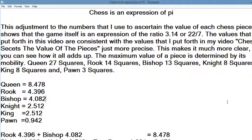This adjustment to the numbers that I use to ascertain the value of each chess piece shows that the game itself is an expression of the ratio 3.14 or 22 over 7. The values that I put forth in this video are consistent with the values from my video Chess Secrets The Value of the Pieces, just more precise. This makes it much more clear as you can see how it all adds up.